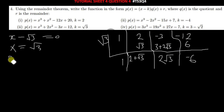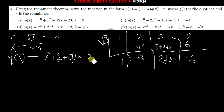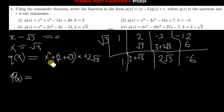From there we can now write our q(x). Our q(x) will now simply just be x squared, then we have plus (2 plus root 3) times x, and then the constant that we've gotten is 2 root 3.